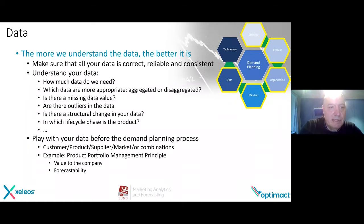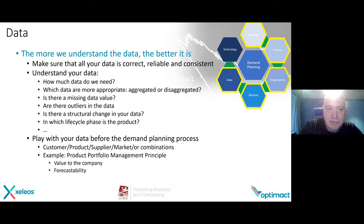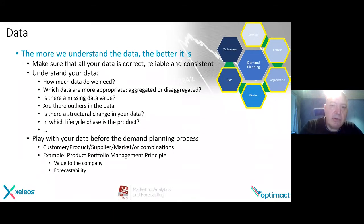How much data do we need? Which data is more appropriate? Do we need aggregated or disaggregated data? Is there missing data? Is there an outlier in the data which I have to remove? Is there a structural change in the data? In which life cycle phase is the product? We often see that people just upload the data and no one is looking at and understanding the data. One step further is that you have to play with your data before the demand planning process — for example, doing segmentations.